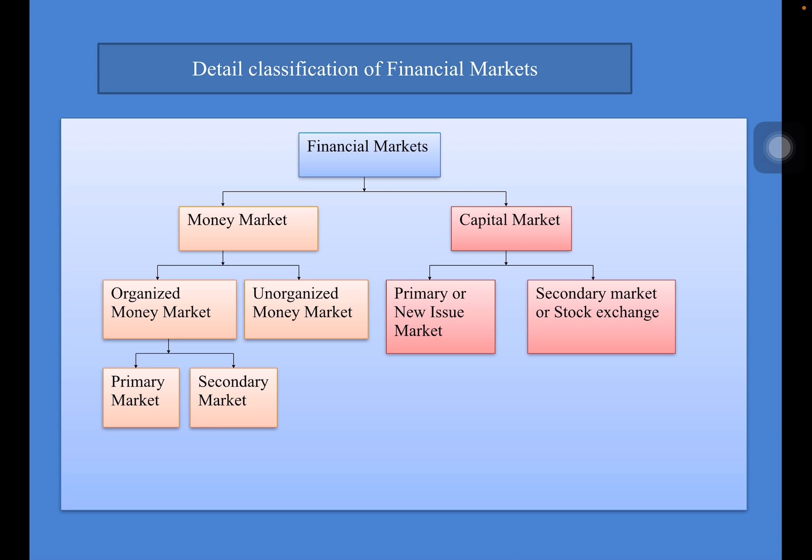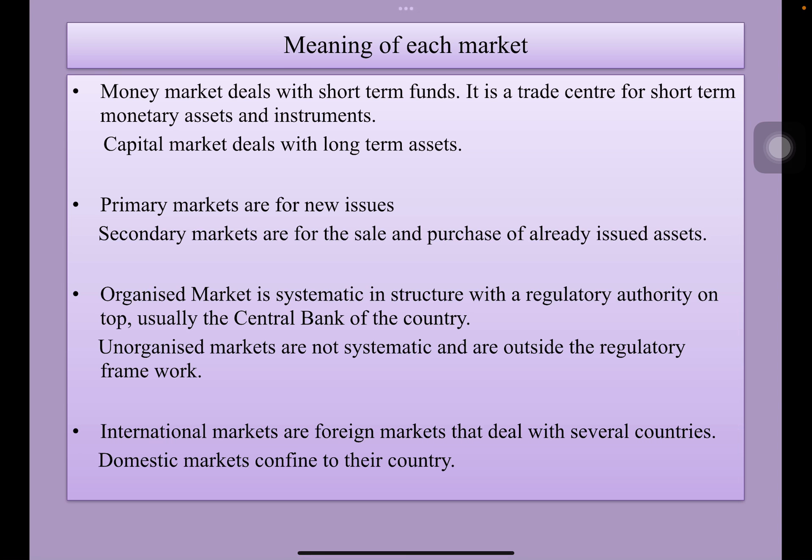Coming to the capital market, it is again divided into two classes: one is the primary market or new issue market, and the other is the secondary market, popularly known as stock exchanges or stock markets. Money market deals with short-term funds — it is a trade center for short-term monetary assets and instruments — whereas capital market deals with long-term assets. For example, money market deals with call loans which mature within 24 hours, whereas capital market deals with shares and debentures which go beyond one year.